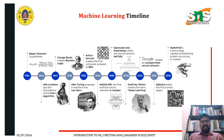Looking at the machine learning timeline: in 1764, Bayes' theorem was published; in 1842, Ada Lovelace laid the foundation of the first algorithm; Boolean logic was developed; in 1936, a machine that can learn was proposed; in 1952, the first computer program was created at IBM; and in 1959, the first artificial neural network was created. From 1764 to 2018, several inventions and laws were proposed towards machine learning.